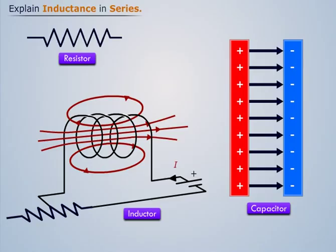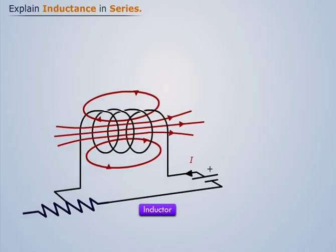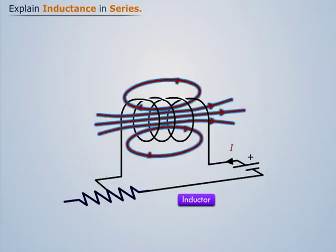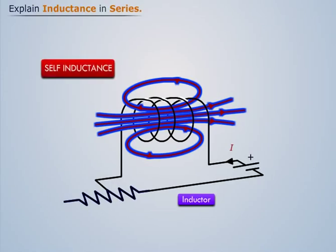It is because of this property that we need to deal with two separate factors when combining inductors in a circuit. The factors are self-inductance and mutual inductance.